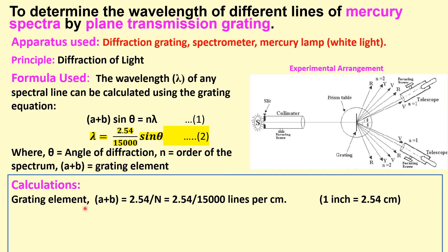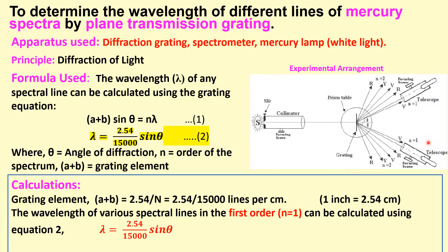For calculations, if we have a grating of 15,000 lines per inch, we convert it to centimeters: 1 inch = 2.54 cm, so (a + b) = 2.54 / 15,000 cm. For n = 1, lambda = (2.54 / 15,000) × sin θ. We find sin θ for different colors — violet, red, or green — by taking readings from both sides of the vernier scale and averaging them.